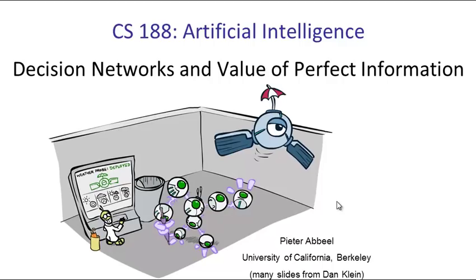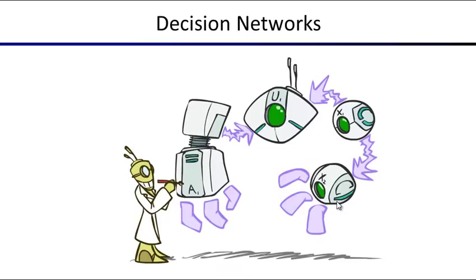The idea there is that maybe you're willing to pay a certain amount for a certain piece of information. Can we compute how much you would be willing to pay to get certain information? So, decision networks — what do they look like?